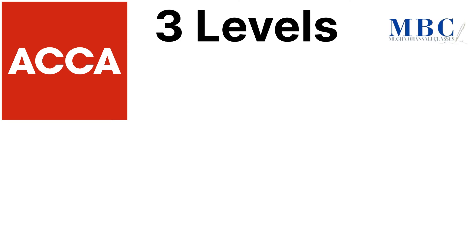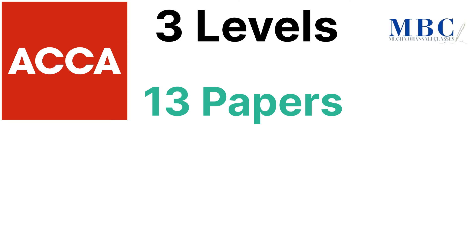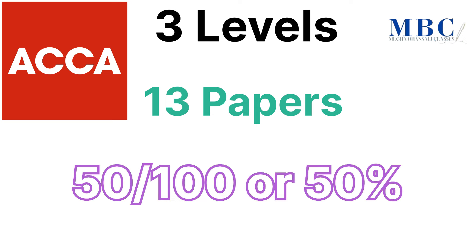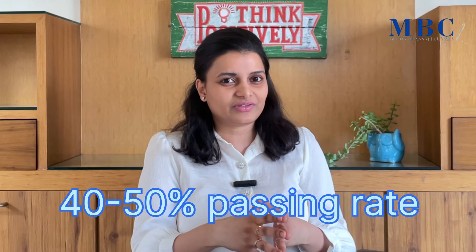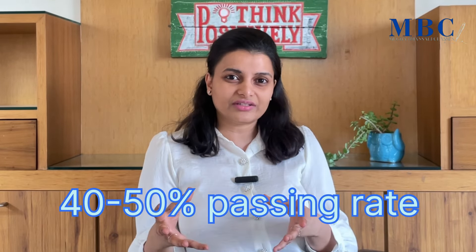Moving on to the global course compared to the Indian CA, which is ACCA. ACCA is also divided into three levels and has 13 papers. The only way to pass is to get 50% in each paper. It is a lot more easier to complete ACCA compared to Indian CA, and it has a lot of flexibility — you can write just one paper at a time without giving the entire group together. The passing percentage is relatively higher, about 40 to 50%, so if 100 students start ACCA, about 40 to 50 of them will get their degree in the very first attempt.